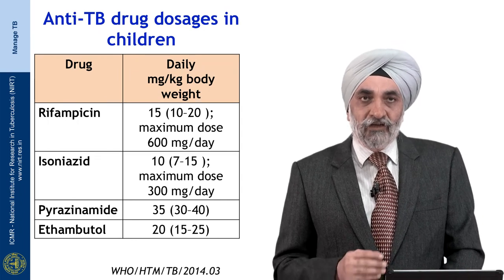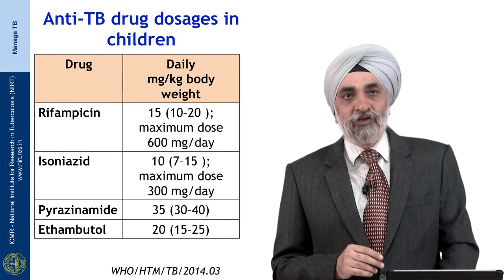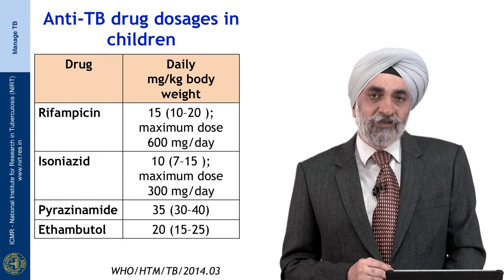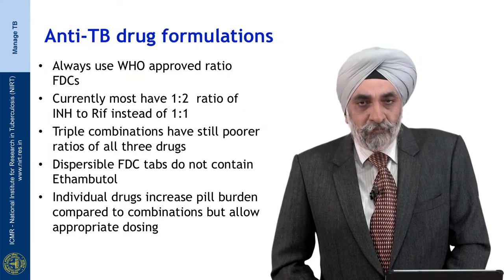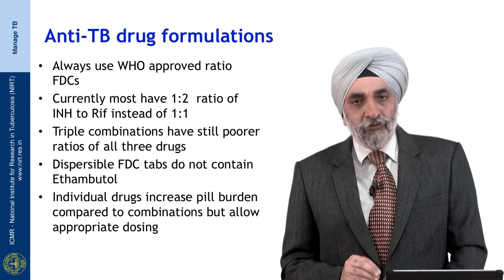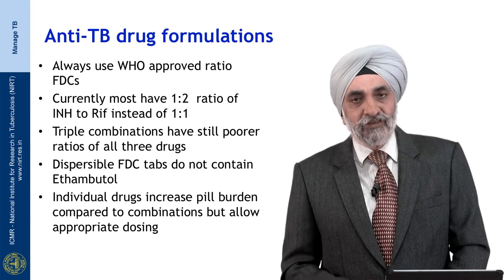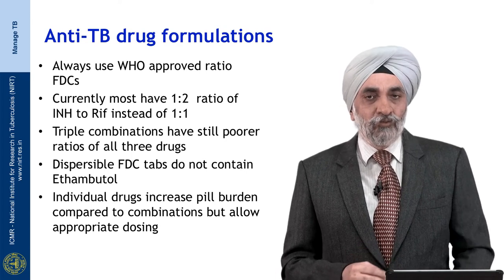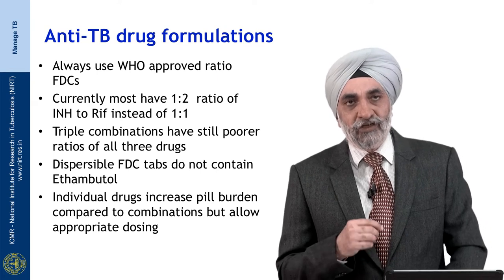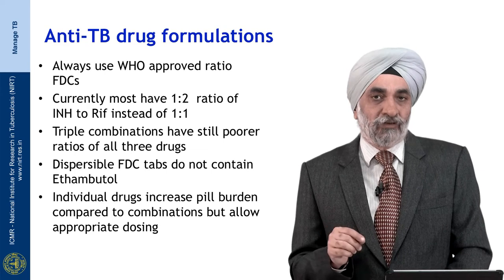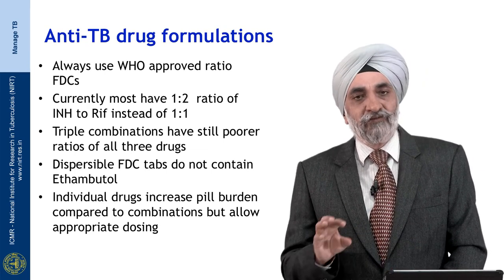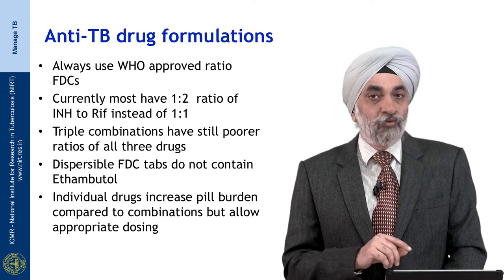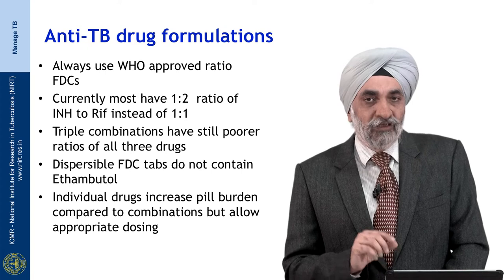Drug doses in children are higher: rifampicin 15 mg/kg (range 10–20), isoniazid 10 mg/kg, pyrazinamide 35 mg/kg/day, and ethambutol 20 mg/kg/day. When drugs are given individually, pill burden can affect adherence, so fixed drug combinations (FDCs) are often used. However, most available FDCs do not have the right ratio — WHO-approved ratio is 1:1 or 1:1.5 of INH to rifampicin, ideally 50 mg INH with 75 mg rifampicin. Ensure any FDC prescribed has the correct combination.